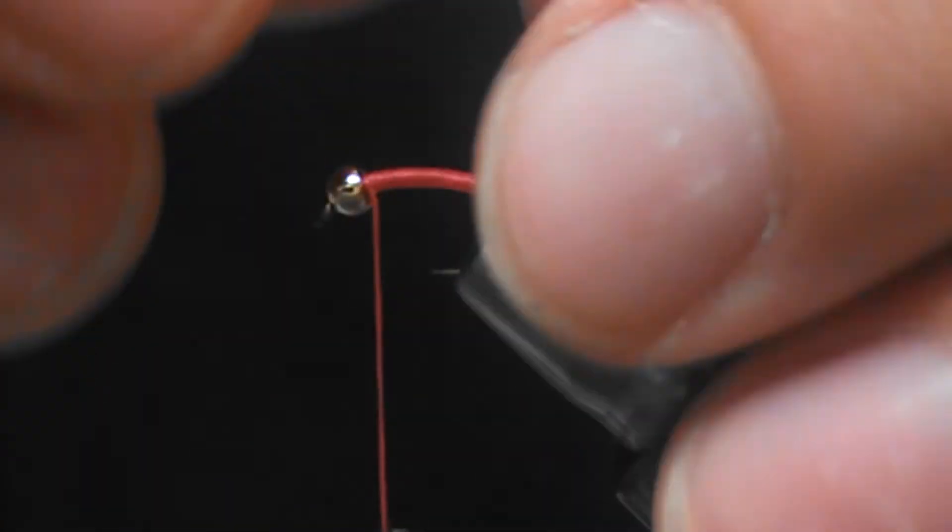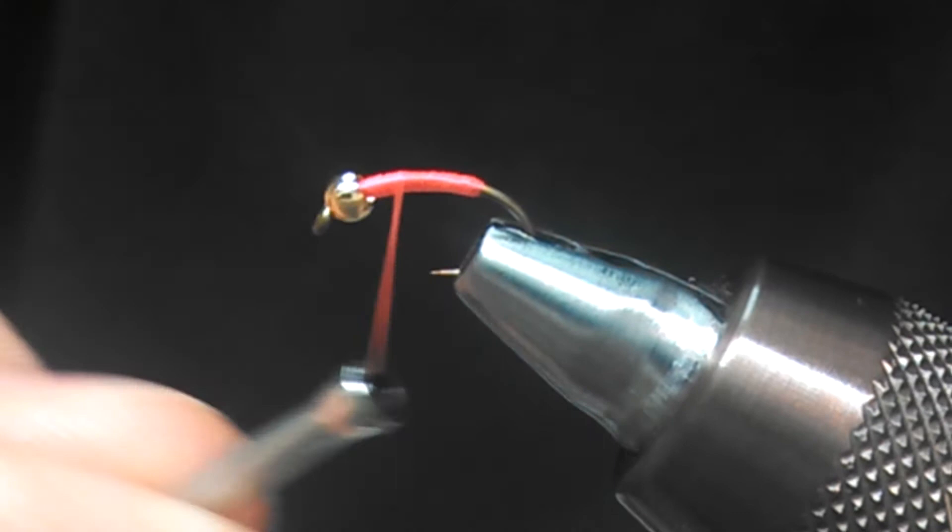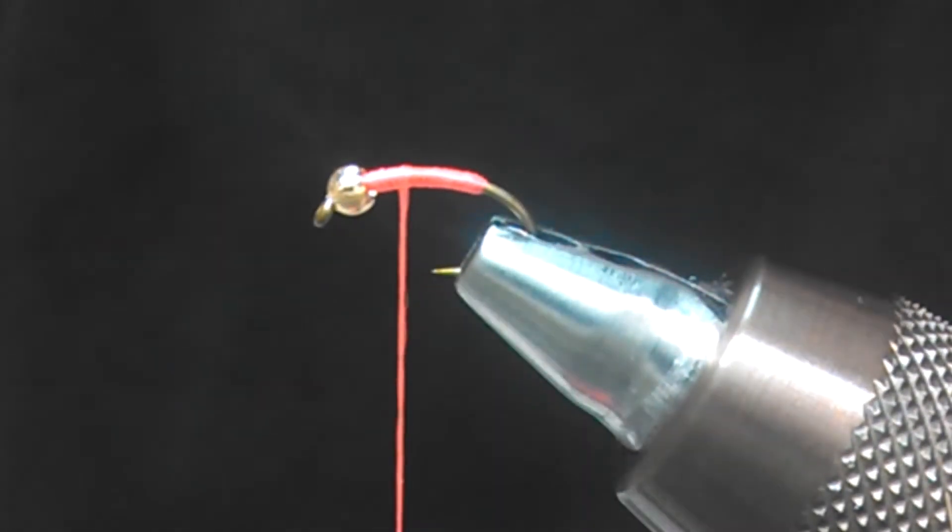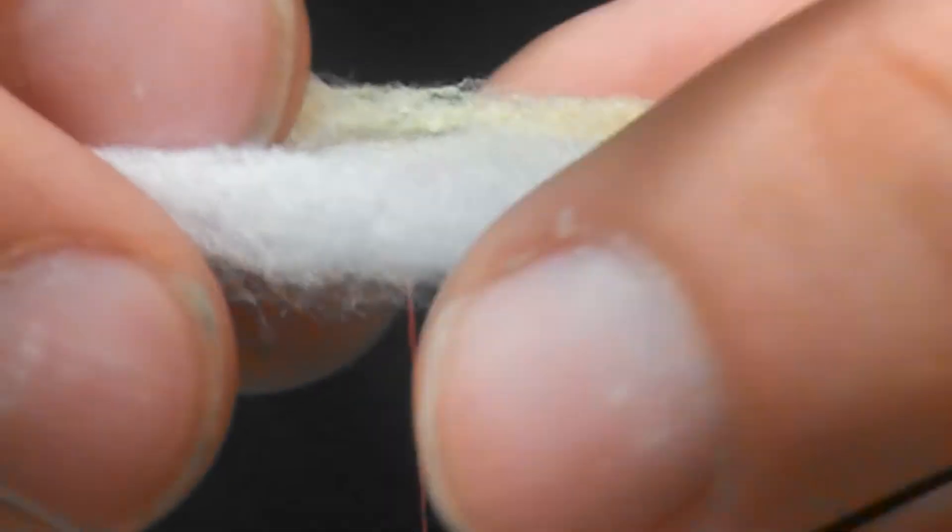So we're going to lay one on each side here. Bring this thread back a little bit right behind the head. We don't want to be quite up on the head yet because we're going to need to tie on there in just a minute.